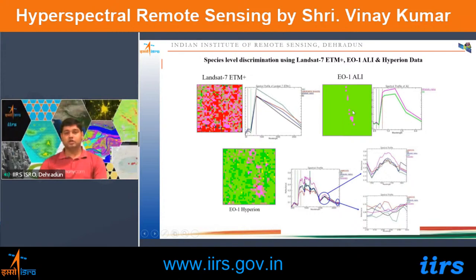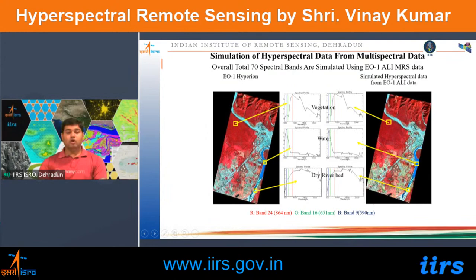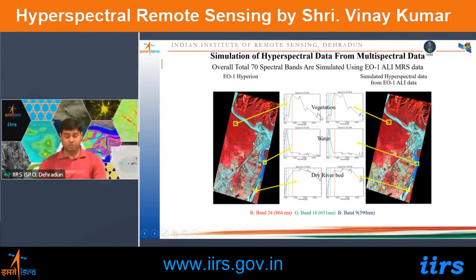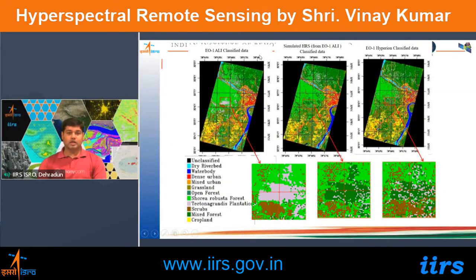Hyperspectral data can also be simulated if real hyperspectral data is unavailable. In work done by a student, 70 multispectral bands were simulated from EO-1 ALI multispectral data with the help of ground-based spectra, producing spectral profiles similar to actual hyperspectral data. Classification of the same area using simulated hyperspectral data significantly reduced the misclassification present in the original multispectral-based classification.